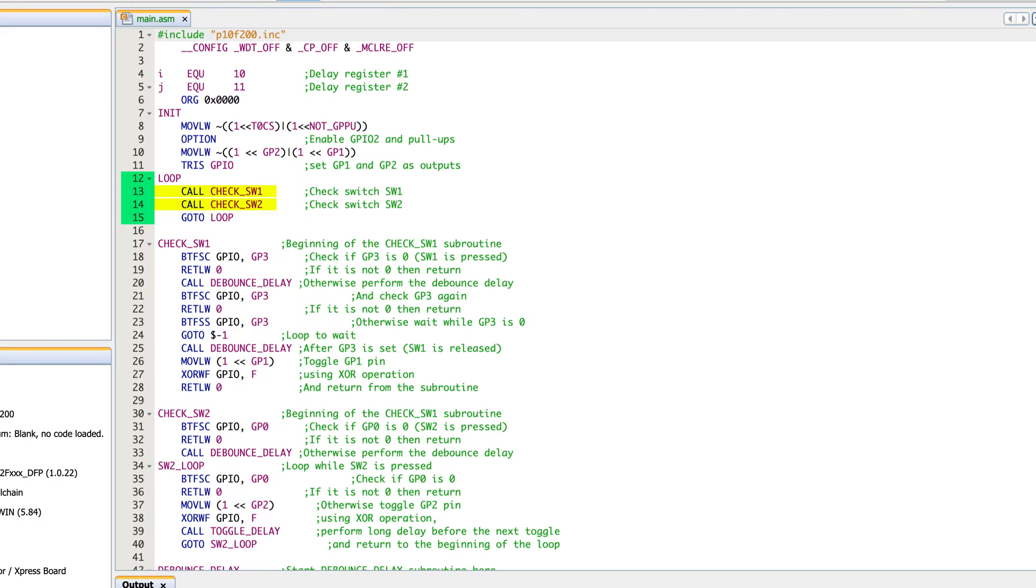If you were building a nice, big, complicated project, you would not do this because it unnecessarily uses processing power. But since we don't have anything else going on, it's not a big deal. So lines 13 and 14, all we're doing is polling switch one.